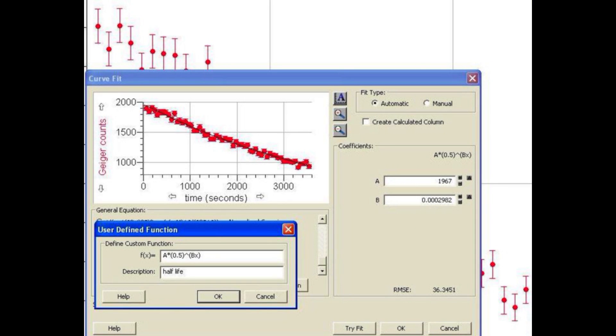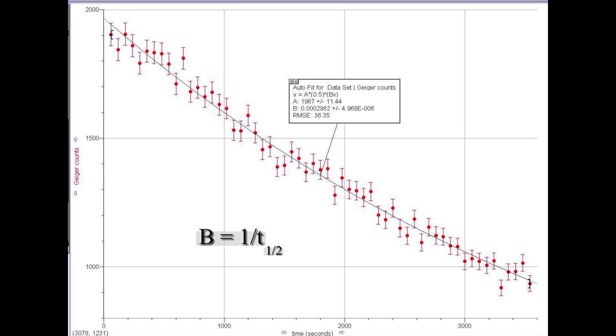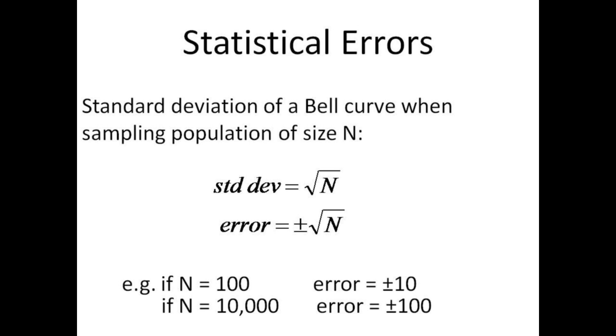Transfer the data to graphical analysis and fit a function a times 0.5 raised to the b times x. The half-life is the inverse of b. Note that we have added error bars. The errors involved in a sampling process of this nature are expected to be equal to the square root of the total number present in the sample. If 100 counts are made, then we expect an error of plus or minus 10. If 10,000 counts are made, then the error is plus or minus 100.